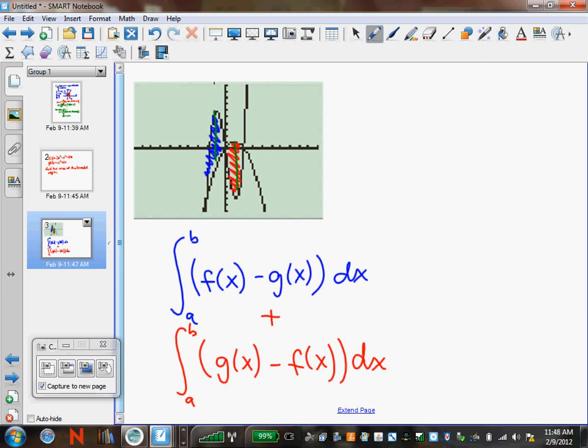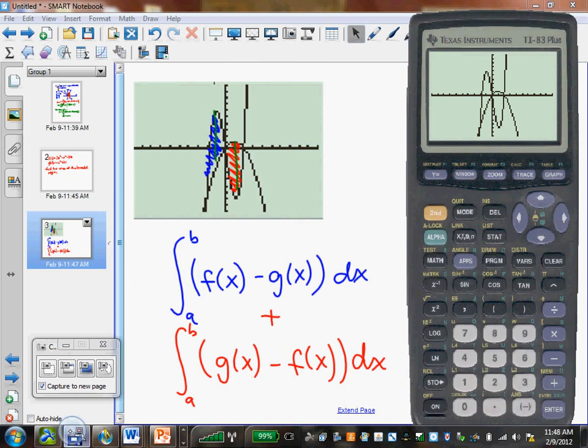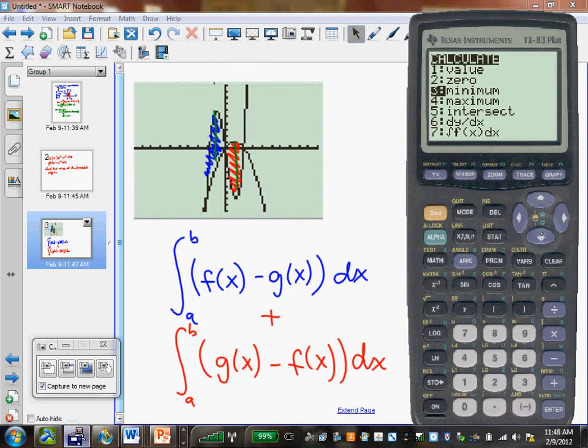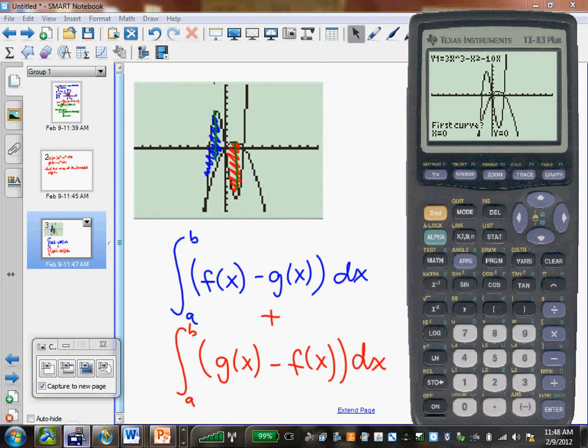So if I go back to my calculator, I need to figure out what my a and my b are. And I can do this by finding where they intersect. So there's one intersection point right there. Let's scroll over to the left.